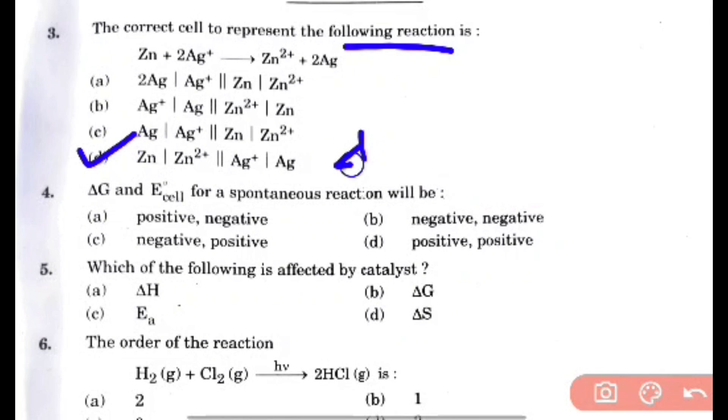Which of the following is affected by the catalyst? That is activation energy. Order of reaction H2 + Cl2 gives 2HCl. If you see that order 2 will be the right answer.